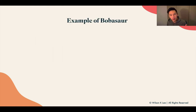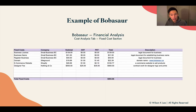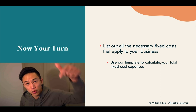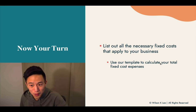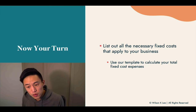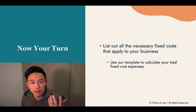Next up is the Bulbasaur example — a case study we created specifically for you. As you can see, we logged the different expenses incurred in our business. You can find this fixed cost analysis in our financial analysis document, which is provided in the template link below. Now it's your turn: go and list out all the necessary fixed expenses that apply to your business, use the template, and use it as inspiration to calculate your costs.